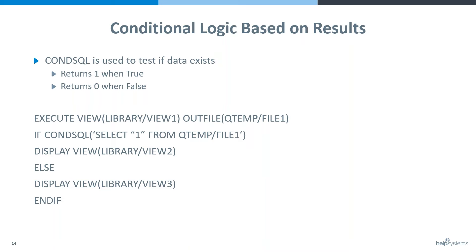Then I start my conditional logic. I say if the condition SQL selects a one from my file in Qtemp, then I'm going to display view two. And then I have my else, which means if that condition SQL wasn't true, then I'm going to display view three.